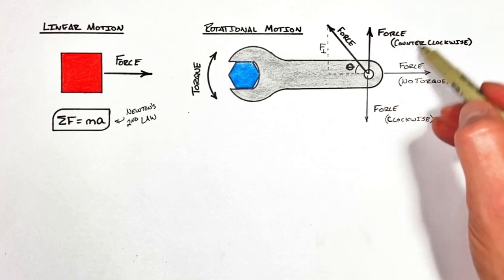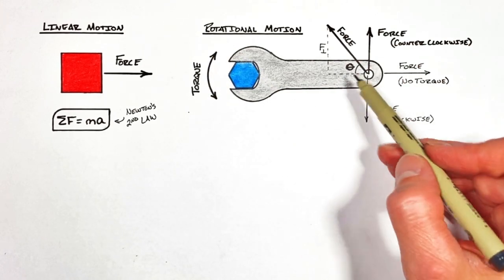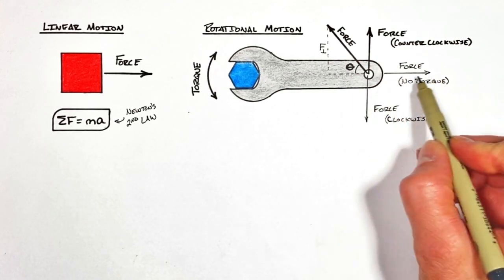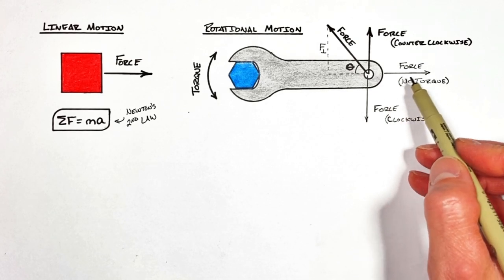Now going back to what we saw originally, a force which was perpendicular to the wrench caused this wrench to rotate. But a force which was parallel to the wrench didn't cause this bolt to rotate at all. It produced no torque.